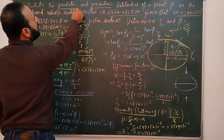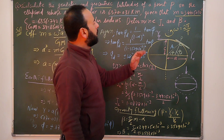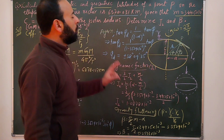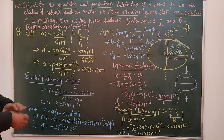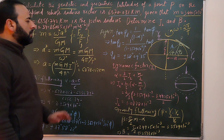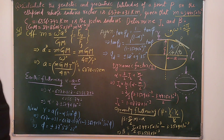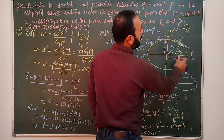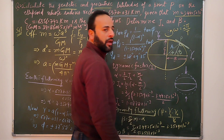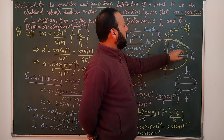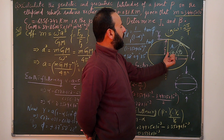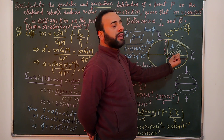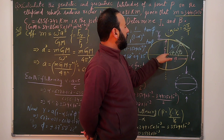We have to find: the geodetic and geocentric latitudes, then J2 and beta — four parameters in total. Consider an ellipsoid with equatorial radius a and polar radius c. Point P has a radius vector r, and its geocentric latitude is φ — the angle the radius to point P makes with the equatorial plane at the center.